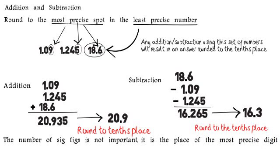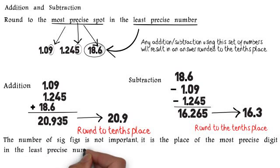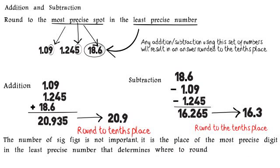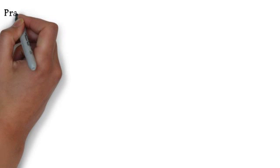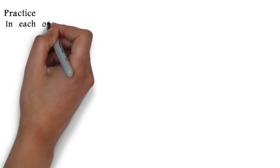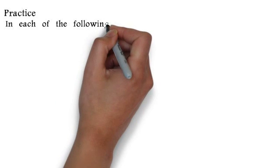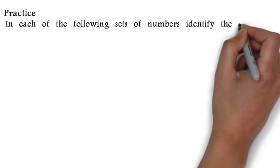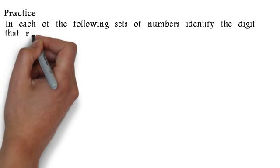It is the place of the most precise digit in the least precise number that determines where to round in addition and subtraction. In multiplication and division it's the number of digits, but in addition and subtraction it is where the most precise digit in the least precise number is located.